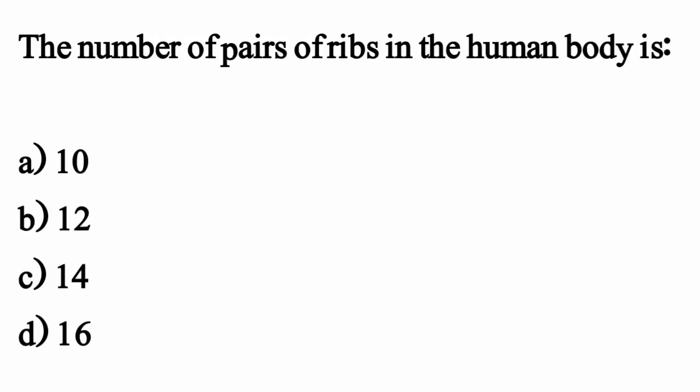The number of pairs of ribs in the human body is — the correct option is Option B, 12.